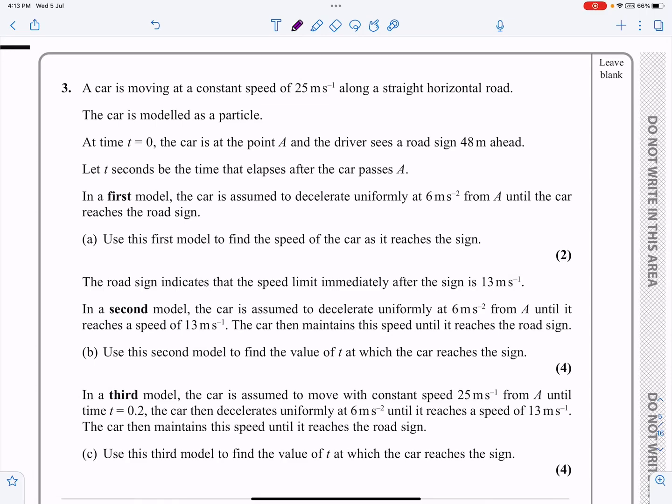Okay, this is the M1 paper from October 2021, question number three. As you can see by looking at it, this is a kinematics question. We're going to be using constant acceleration and SUVAT here to solve it. It's quite unusual in that we have this initial scenario, but then we have one, two, three different models that we're going to apply to it. Sort of three questions in one, really.